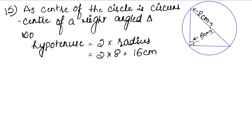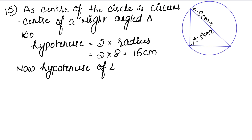Our hypotenuse is now known. We are talking about the circle around the triangle. Now, the base we know is 16 cm and the height (altitude to hypotenuse) is 6 cm, so we can easily find the area. The hypotenuse of the right triangle is the base of the triangle.